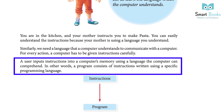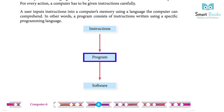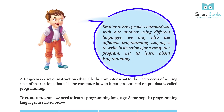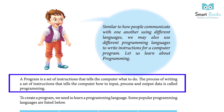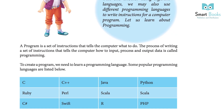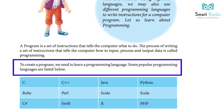For every action, a computer has to be given instructions carefully. A user inputs instructions into a computer's memory using a language the computer can comprehend. A program consists of instructions written using a specific programming language. Similar to how people communicate using different languages, we may also use different programming languages to write instructions for a computer program.